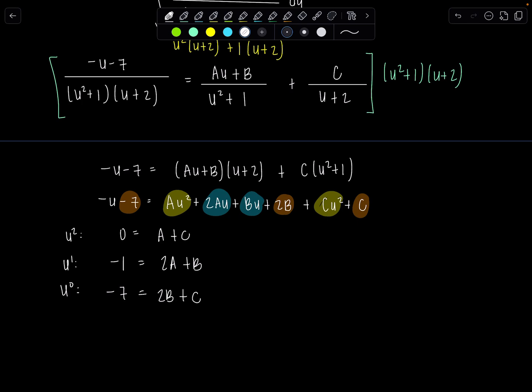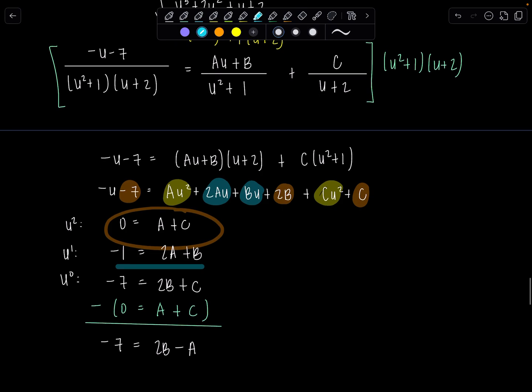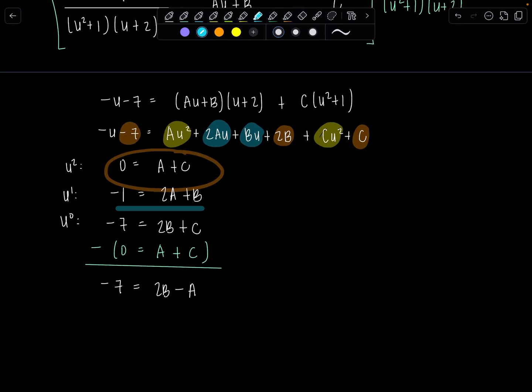So no two equations involve the same two variables. But you can go ahead. Let's see. Let me take this equation down here and subtract the one above from it. So if I subtract 0 equals a plus c. Now I have negative 7 equals 2b minus a.